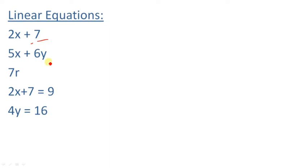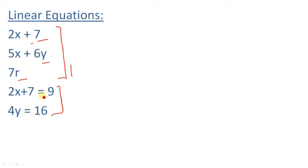You can see expressions like 2x, 2x plus 7, 2x plus 6y, and 7r. These are expressions without an equal sign. Now look at 2x plus 7 equals 9, and 4y equals 16 — there is an equal sign here. When there is an equal sign, it becomes an equation, meaning we can solve it and find the value of the unknown number.